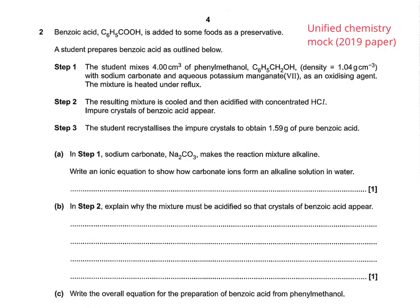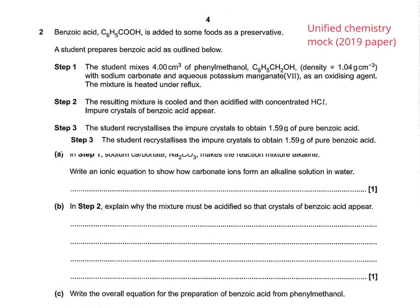Hello, welcome to this clip going through question number two from the 2019 Unified Chemistry paper, which was used at the Remark here at College. As you'd expect, it's a question that goes through several different aspects of your chemical knowledge, and it starts with a step-by-step description of how a student prepared benzoic acid.